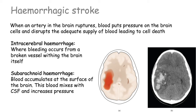A hemorrhagic stroke is when an artery in the brain ruptures and blood puts a lot of pressure on the brain cells, also disrupting adequate blood supply and leading to cell death. Hemorrhagic strokes may be divided into intracerebral hemorrhage, where bleeding occurs from a broken vessel within the brain itself, or subarachnoid hemorrhage, where blood accumulates at the surface of the brain — between the brain and the skull — mixing with CSF in the subarachnoid space, causing a gradual increase in pressure. The most common cause of subarachnoid hemorrhage is a ruptured aneurysm.